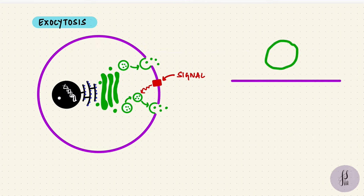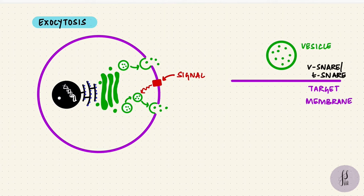The fusion of the vesicle to the membrane involves different proteins. One complex is the V-SNARE, T-SNARE complex. V is for vesicular and T is for the target membrane. Along with this, there are other proteins and GTPases.